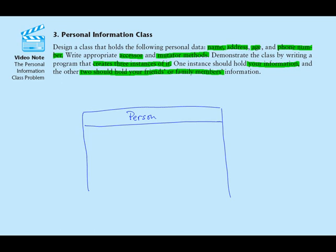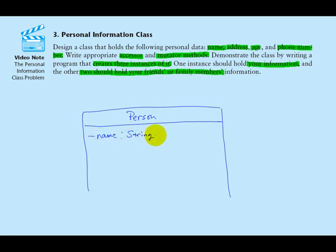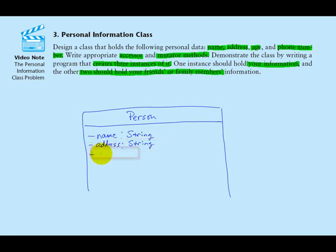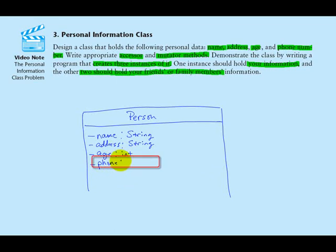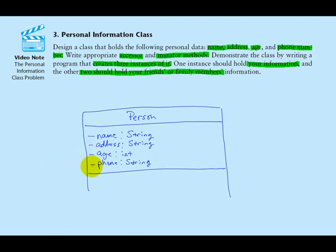In the next section, we list the fields. We need a name field, which is going to be a string. We need an address field, which is also a string. We need an age field — we can use an int variable for that. And finally, a phone field, which will be a string. The minus sign preceding each of these fields in the UML diagram simply indicates that they are private.